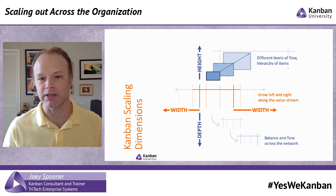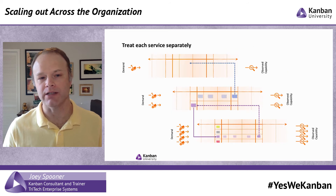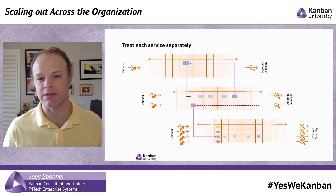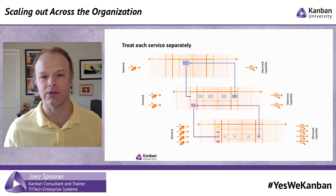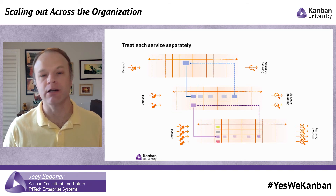Here's an example of what scaling might look like: you have demand coming in and it works its way down to additional services. That first service could be your customer-facing service that deals with the customer end to end. The customer makes a request, you pick up the result and hand it back to them — but that result comes through a cascading effect of working with other services in your business.